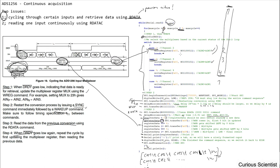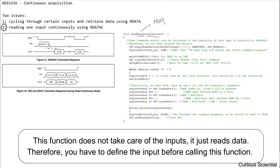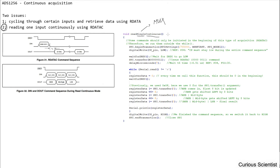Now let's address the second approach: reading a single channel continuously. The full function is shown here. The input channel must be selected beforehand using the WREG command to write the MUX register. Once that is done, we start the SPI communication and wait for data ready. Then we move to the command sequence.